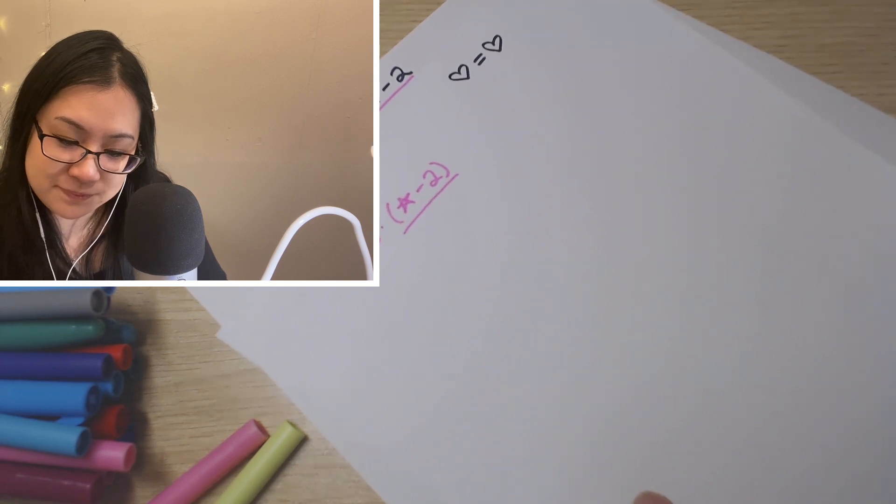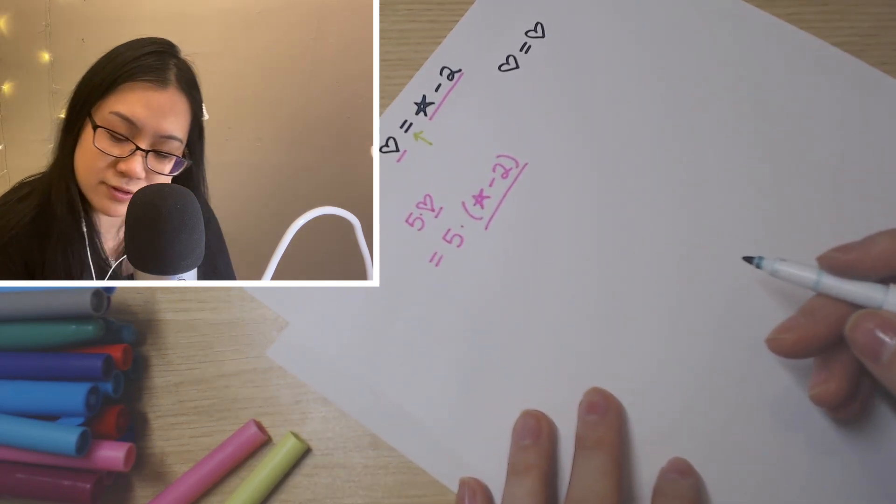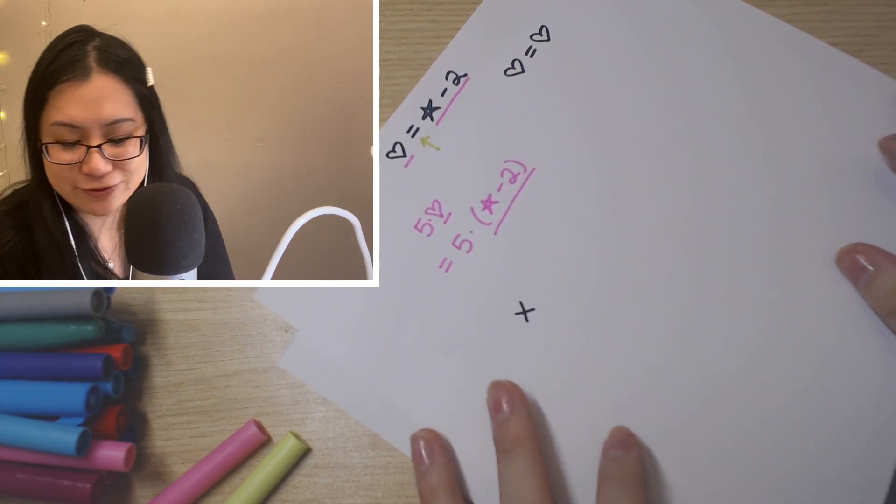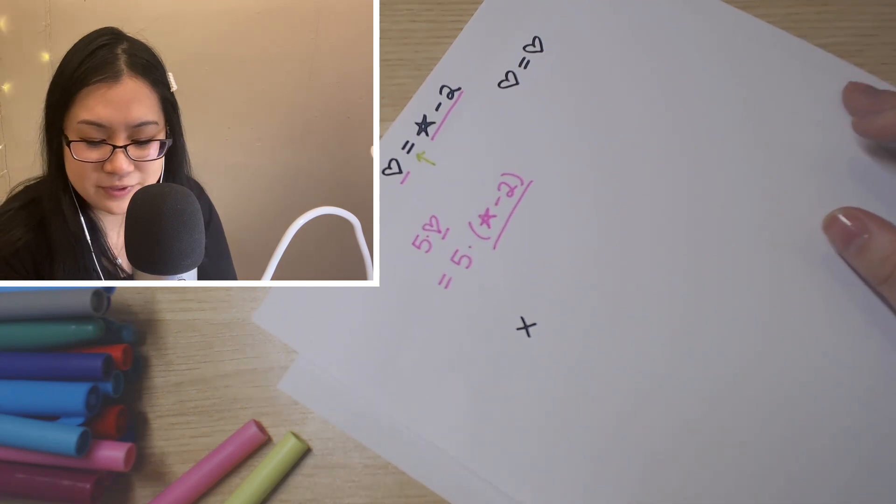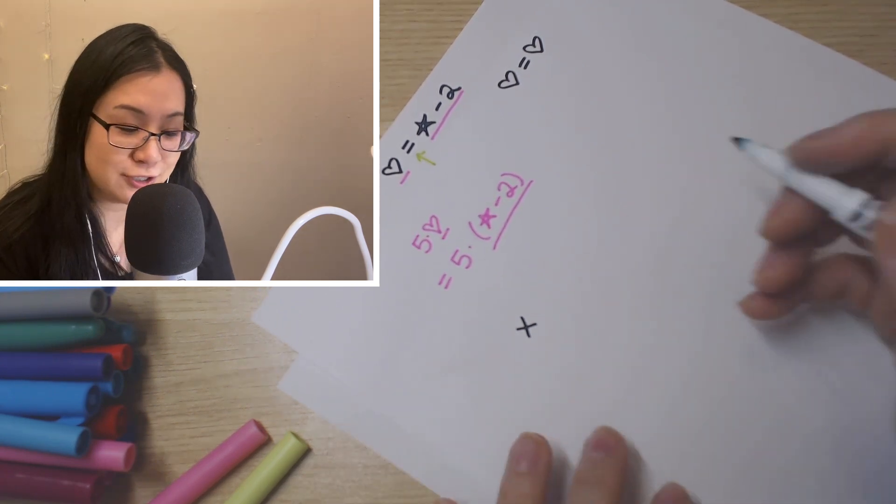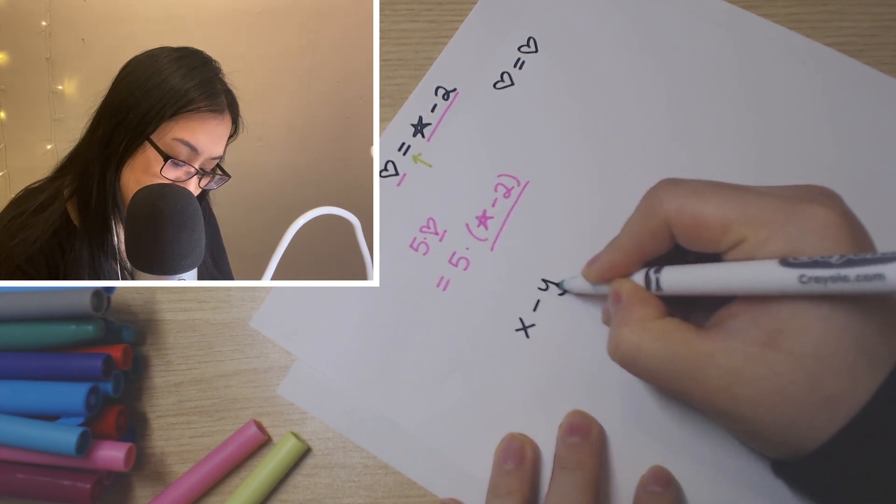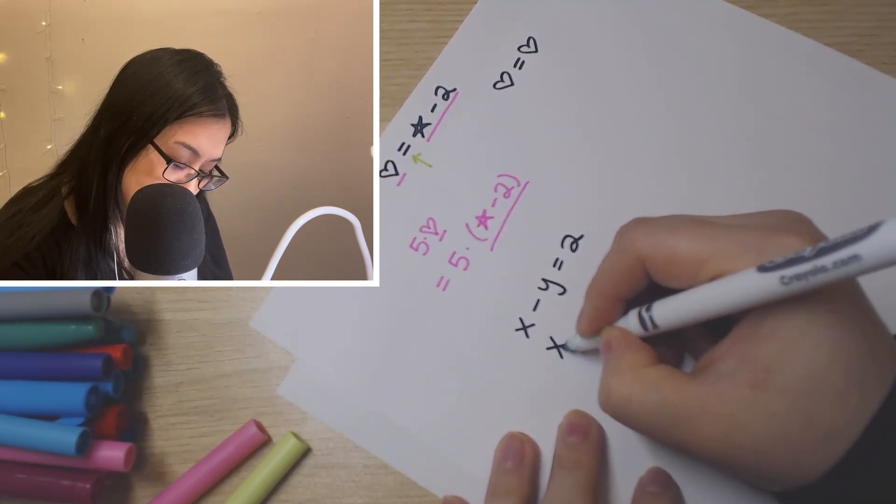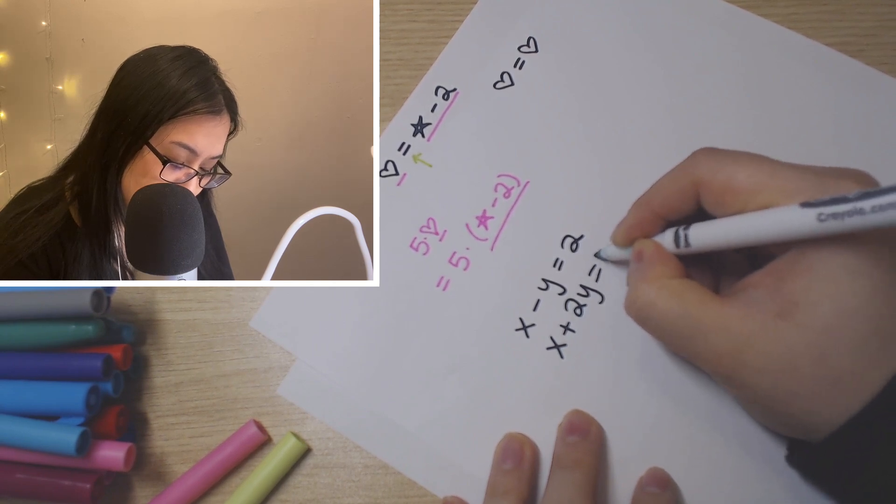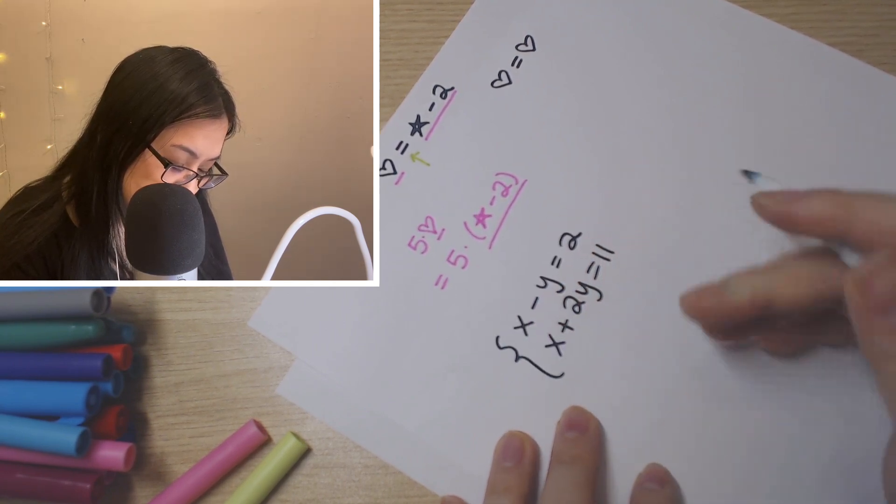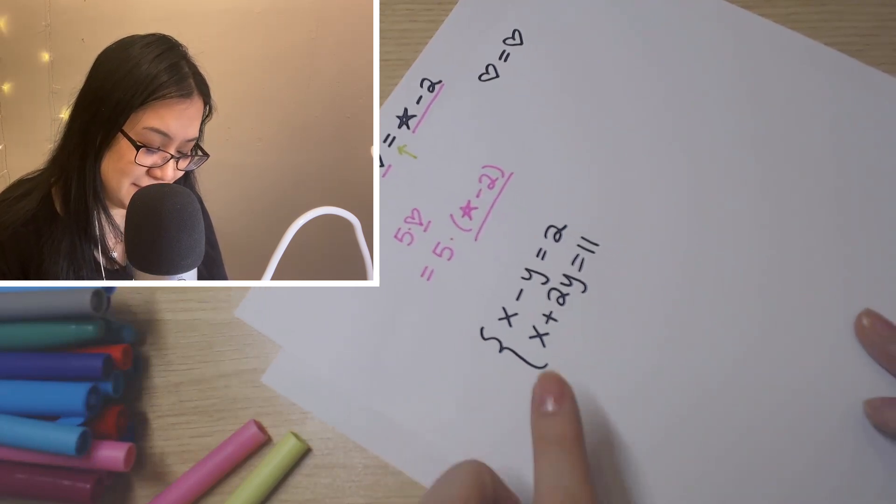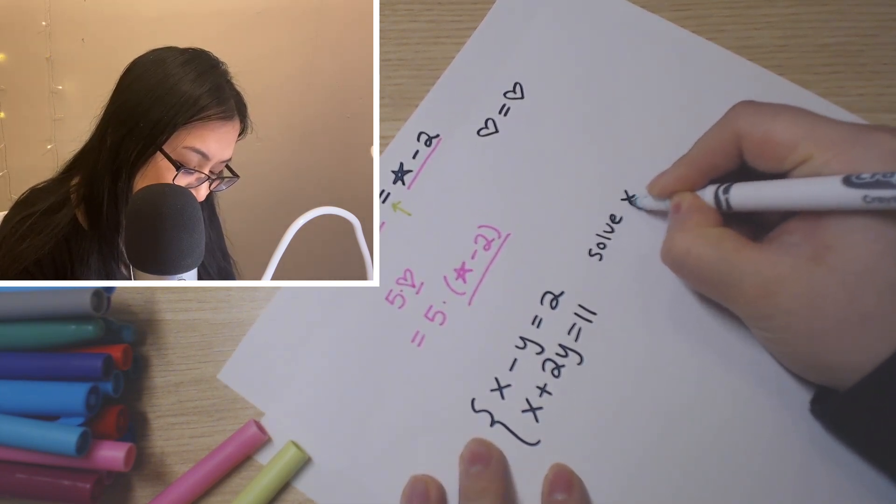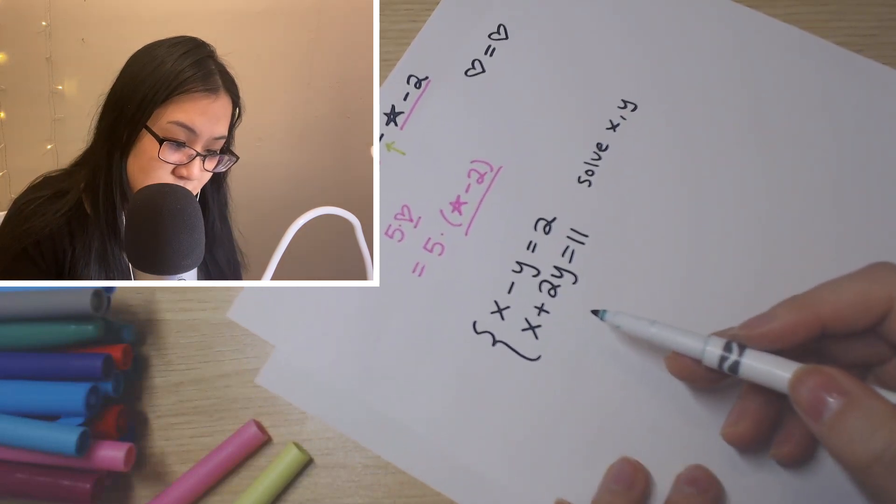Do you have a direct problem we can look at? Show me. So you have X minus Y equals two, and what else? X plus two Y equals eleven. Great. So we're solving for this. So first of all, what does that mean? Can you tell me what that means?